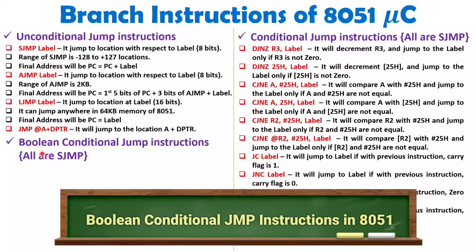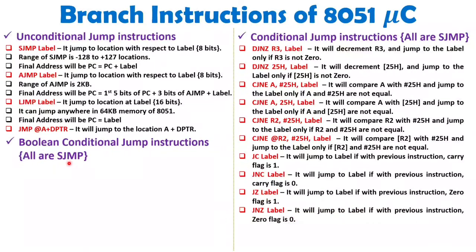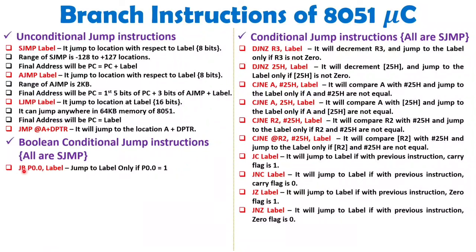Now I will explain Boolean conditional jump instructions, which are also short jump only, having a range of minus 128 to plus 127 locations. We have JB, meaning jump if bit — we check the bit written, for example P0.0, comma label. If that bit equals 1, then only we jump to the label. So bitwise boolean jump instructions are available.